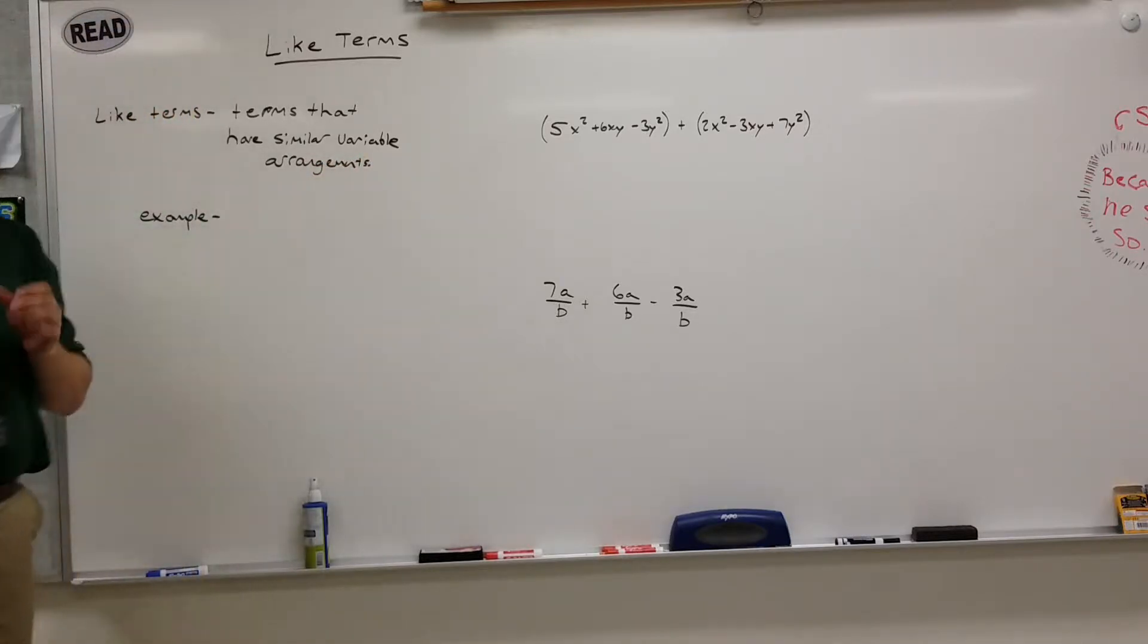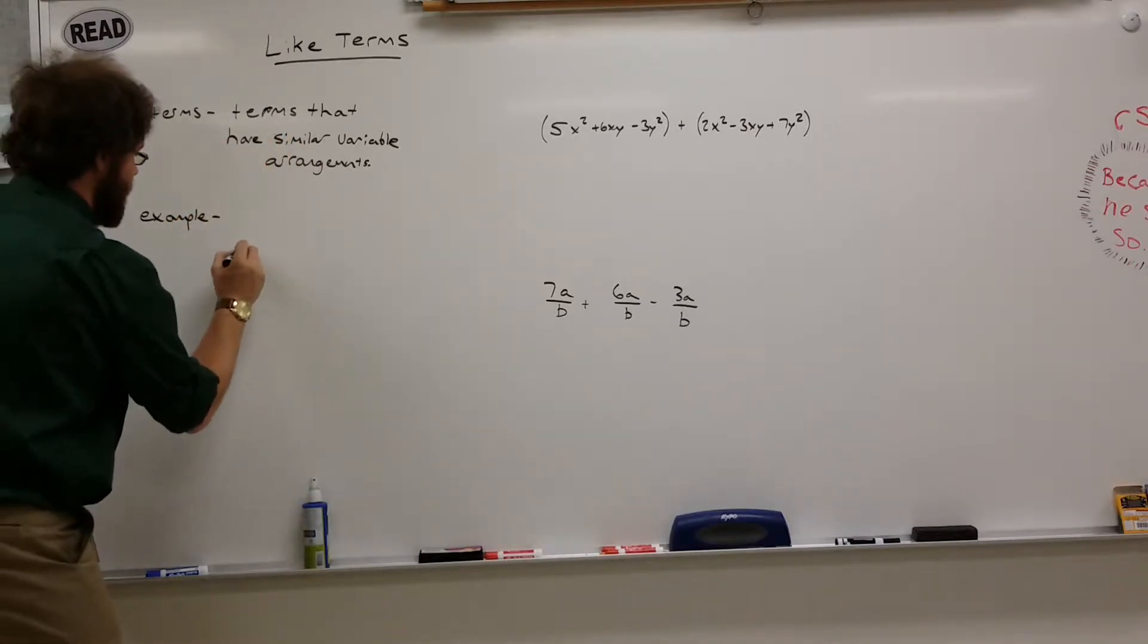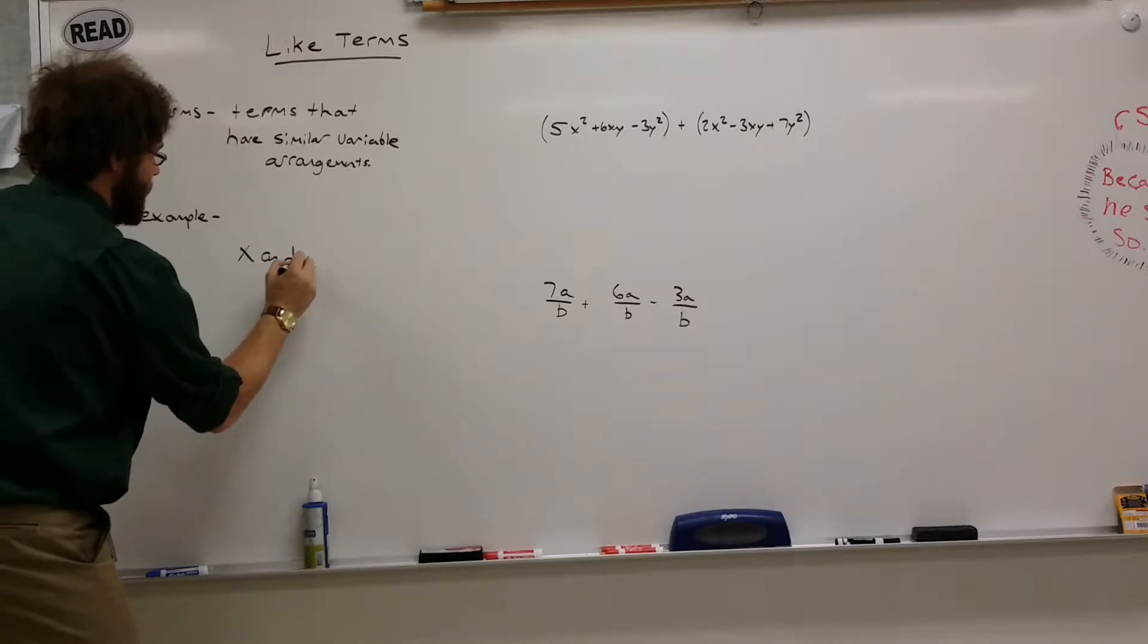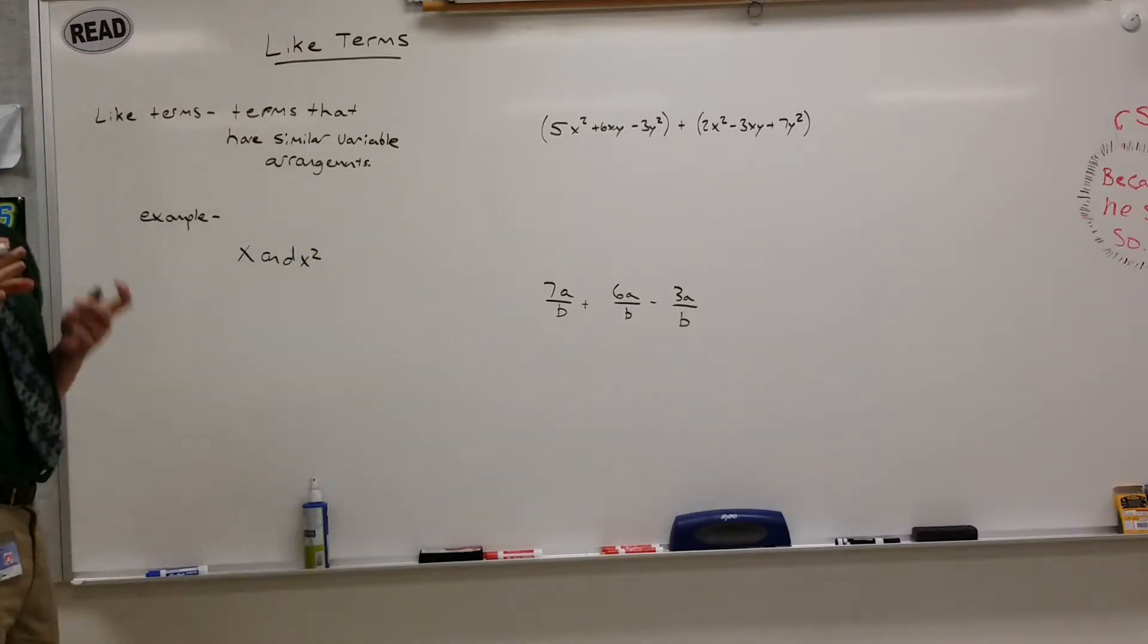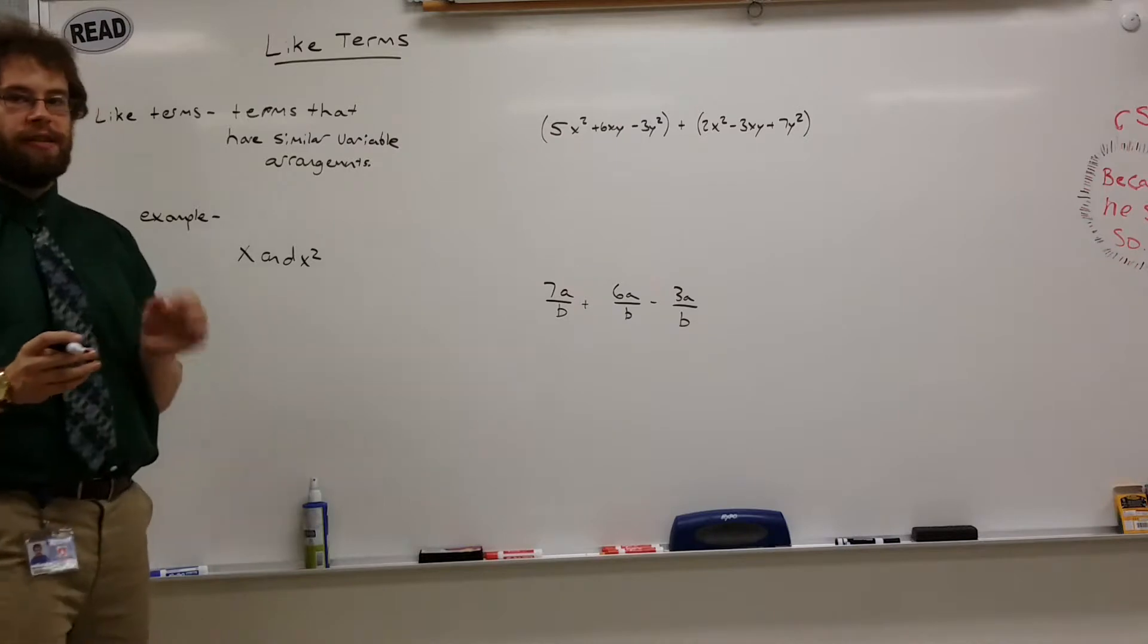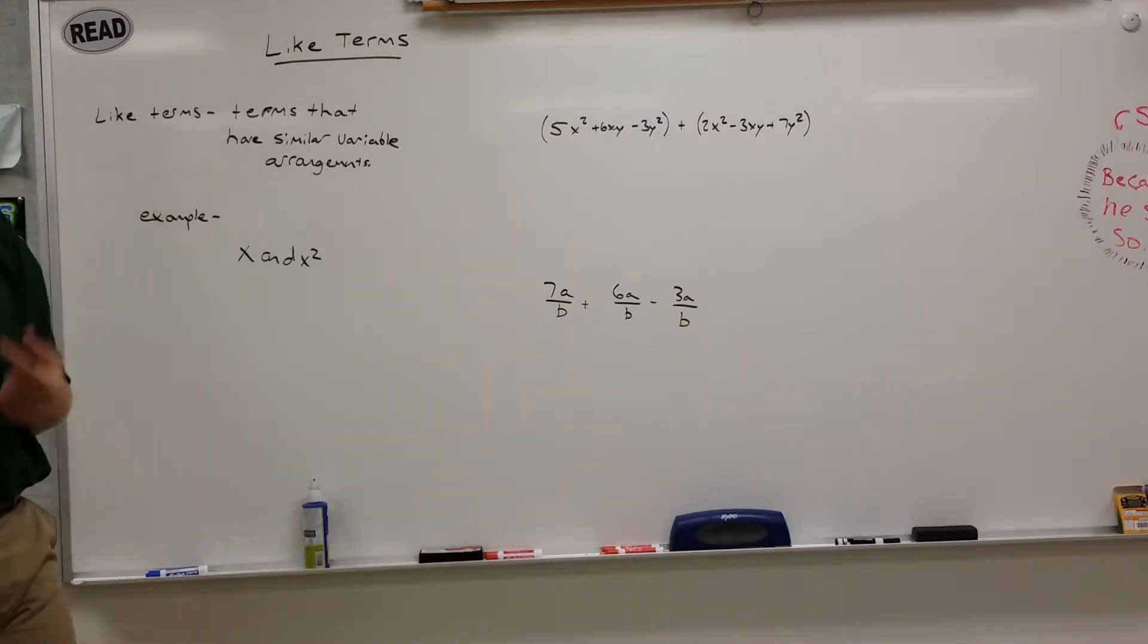So they're going to be things that have similar terms, similar variables in them. So for instance, x and x squared are not like terms. x and x squared are two different types of terms. One has an exponent and one doesn't.